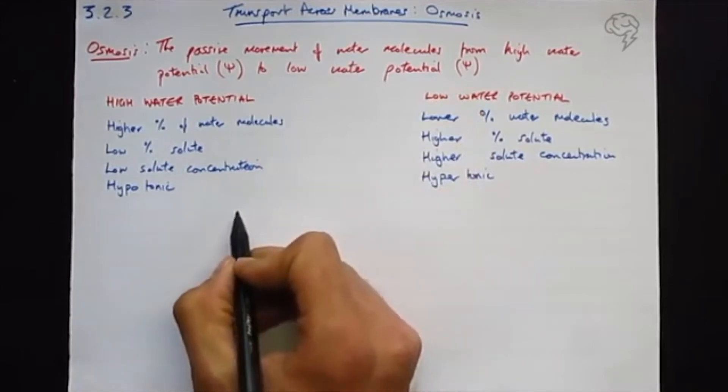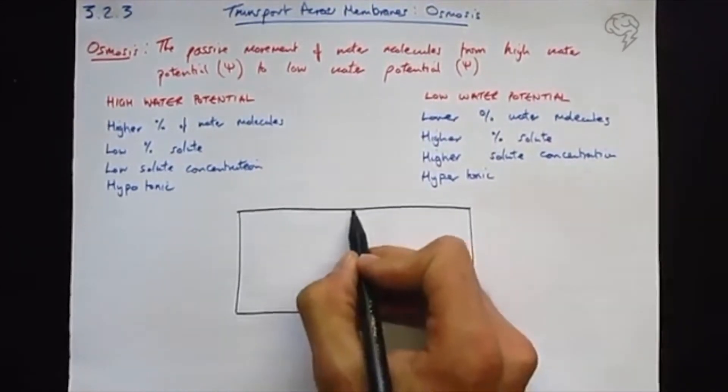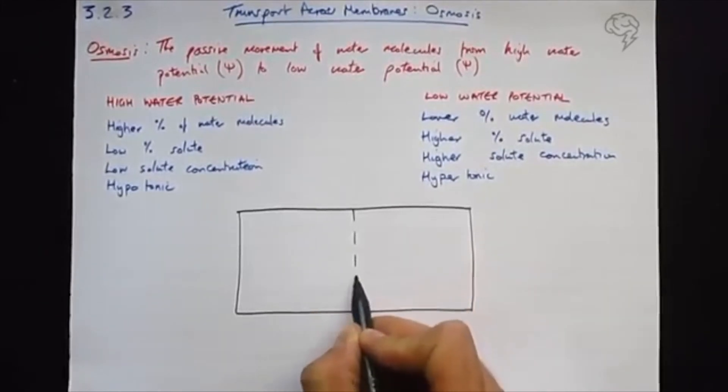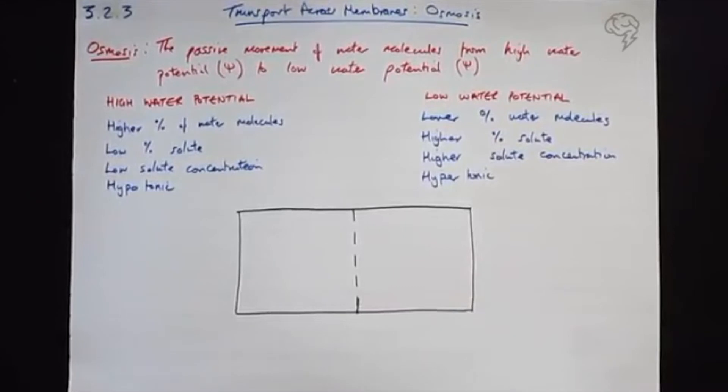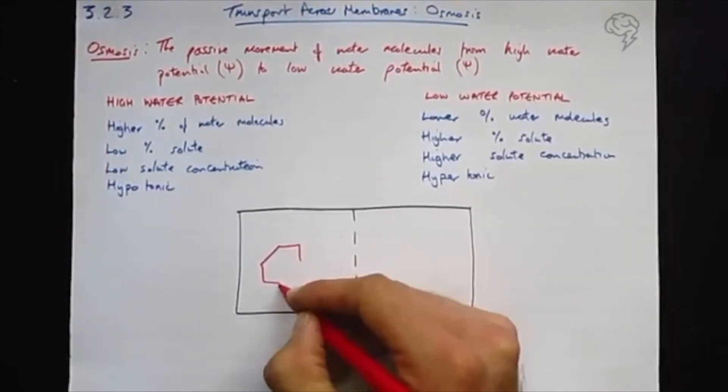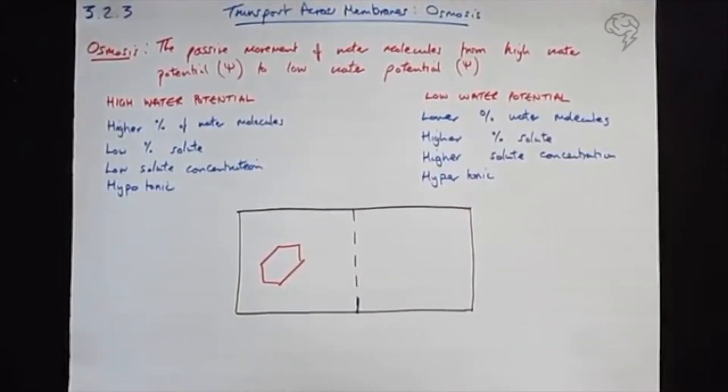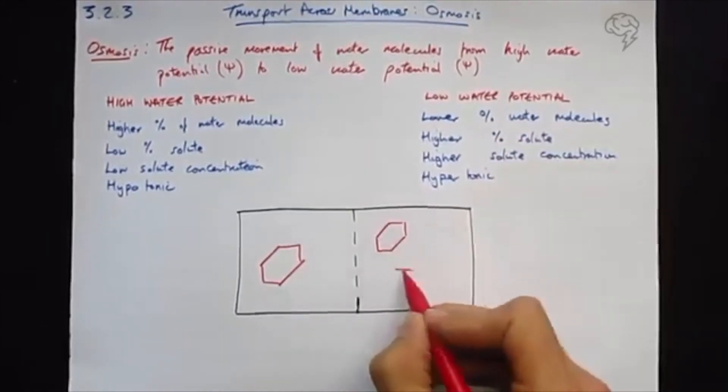So the diagram is going to go here in the middle. This should be across a partially permeable membrane, so this is me drawing my partially permeable membrane like a cell surface membrane. So high water potential has got a low percentage of solute. The solute in this example I'm going to do a molecule of glucose, which is a hexose sugar. I'm going to draw it as a hexagon, I'm going to draw it quite big, too big to fit through the gaps. On this side we're going to have a high concentration of solute.